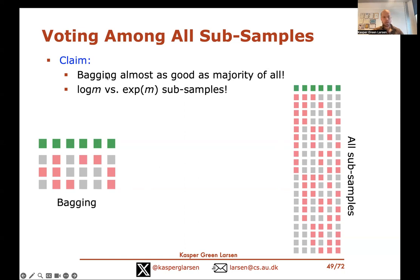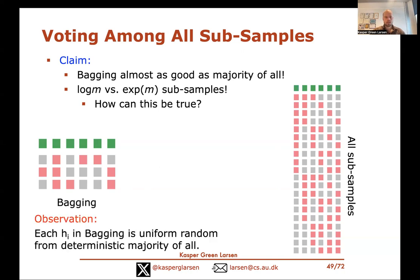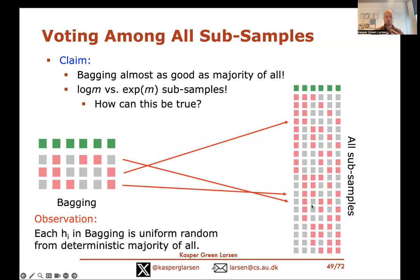The claim is that bagging will be almost as good as the majority vote of all these exponentially many subsamples. This is surprising because bagging only uses a logarithmic number of subsamples, while here we have an exponential number. The key observation is that each hypothesis from bagging is a uniform random hypothesis among all the hypotheses in this giant majority vote — drawing a random subsample is exactly the same as drawing a random hypothesis from among all exponentially many.